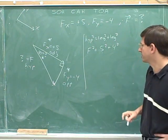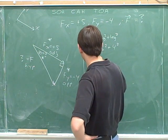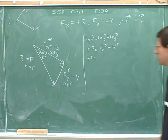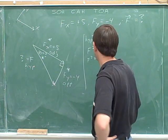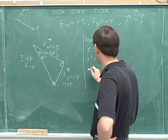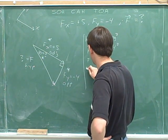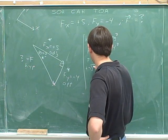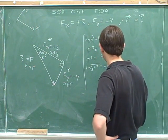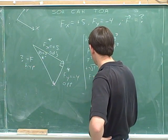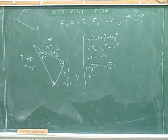These are lengths, so we don't plug in signs. 5 squared plus 4 squared is 41. To get rid of the squaring, we have to take the square root of both sides, and the square root of 41 is 6.4.